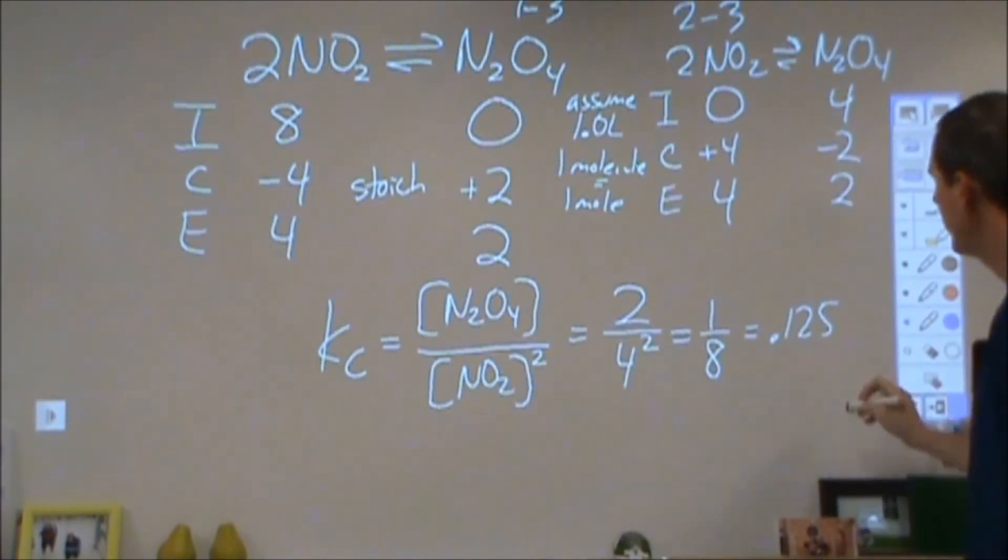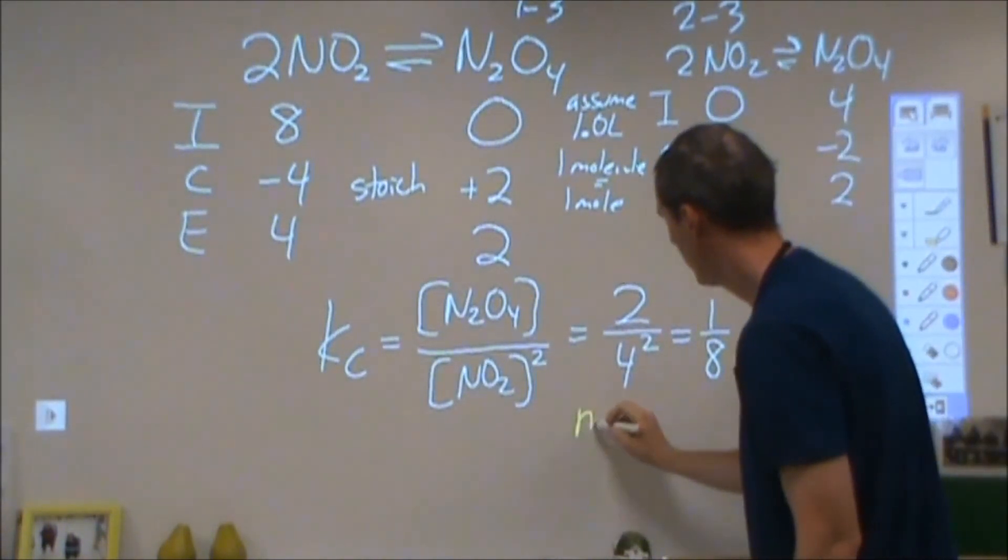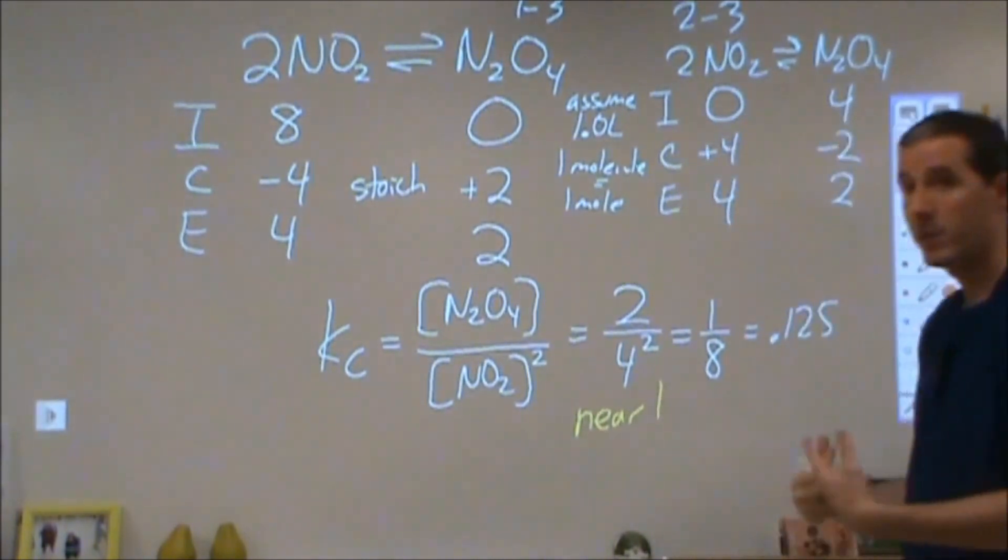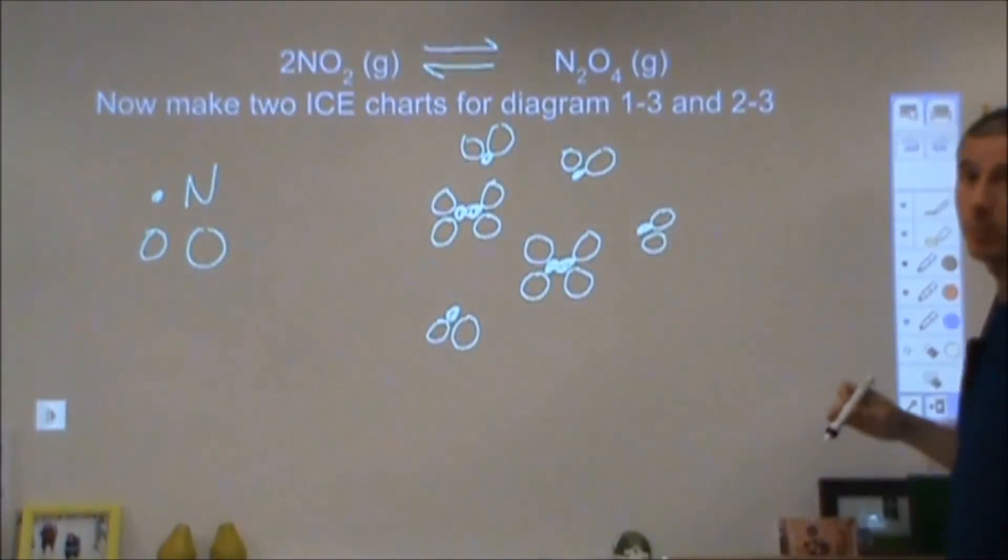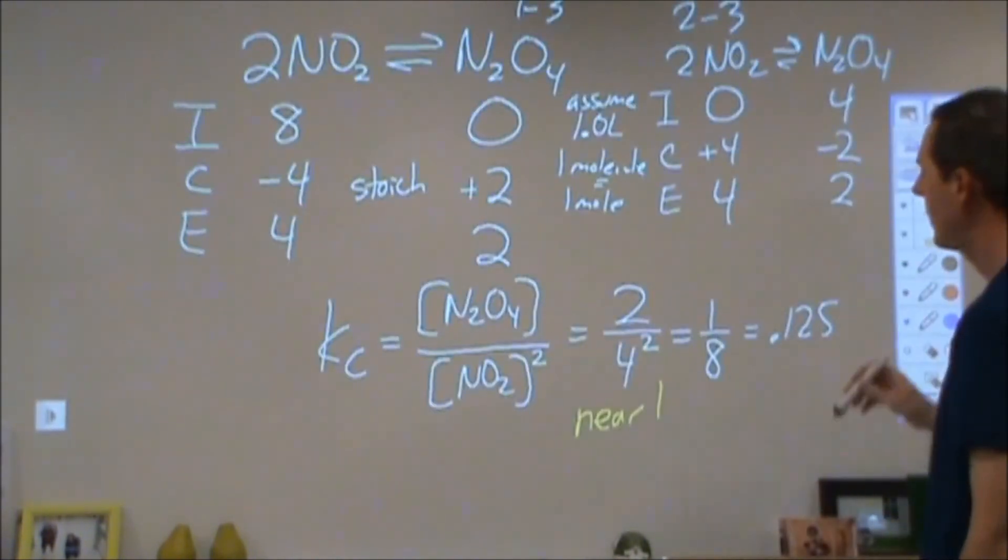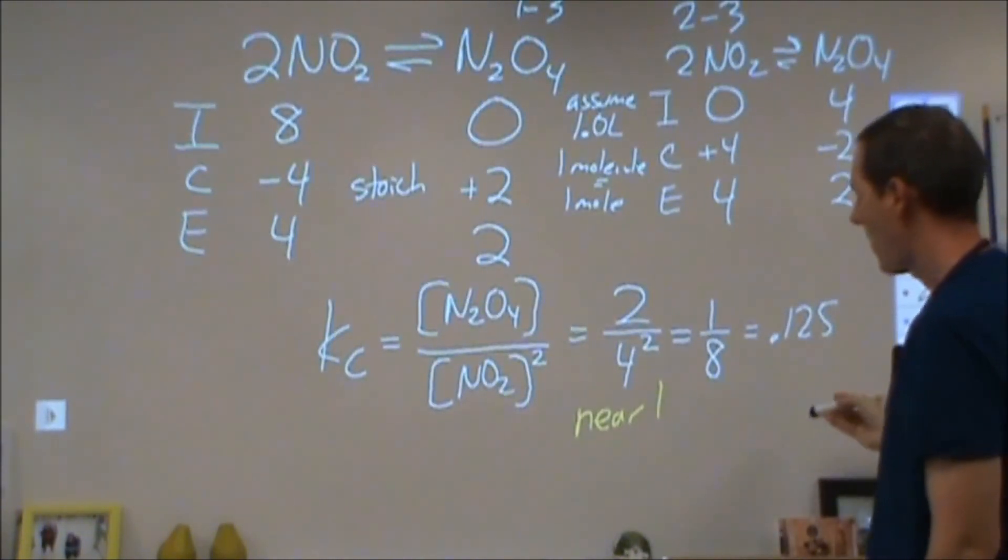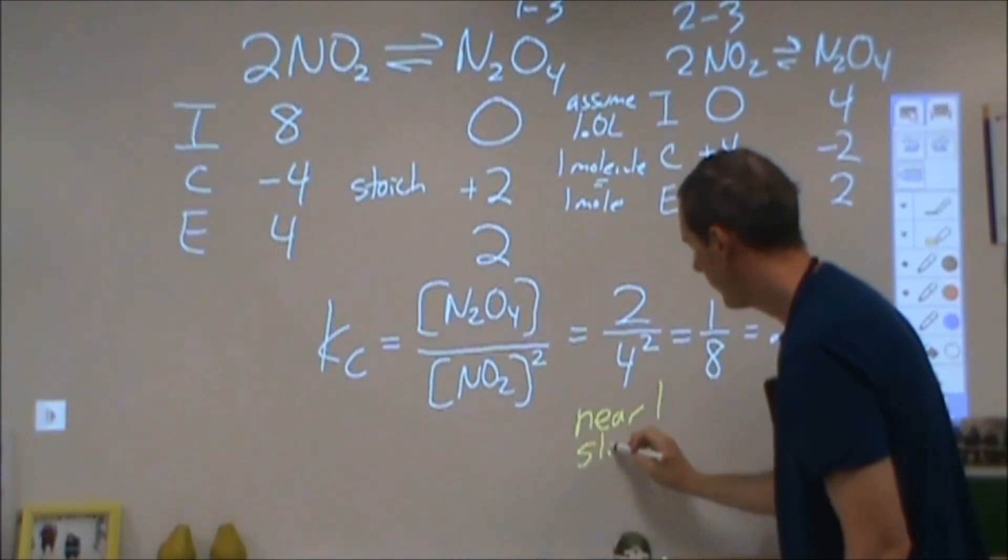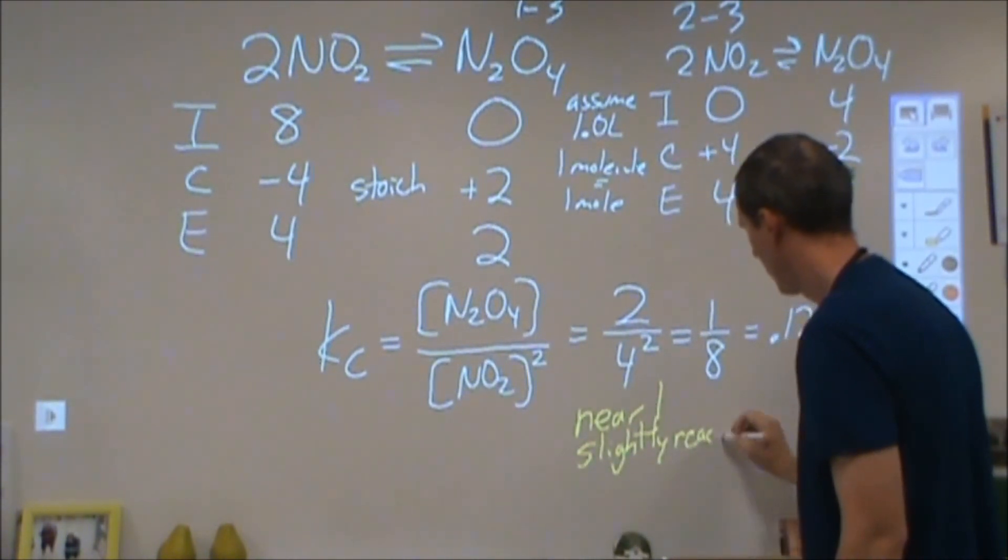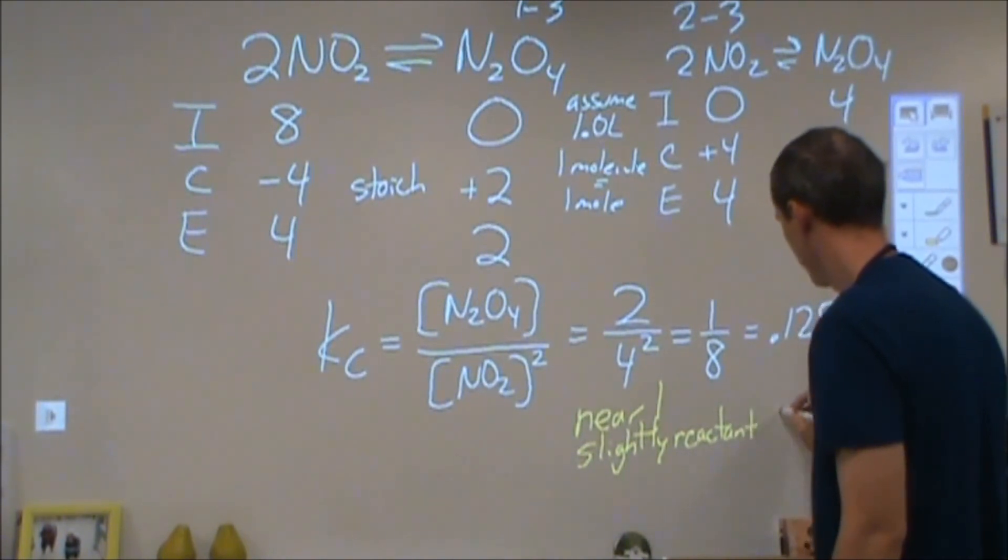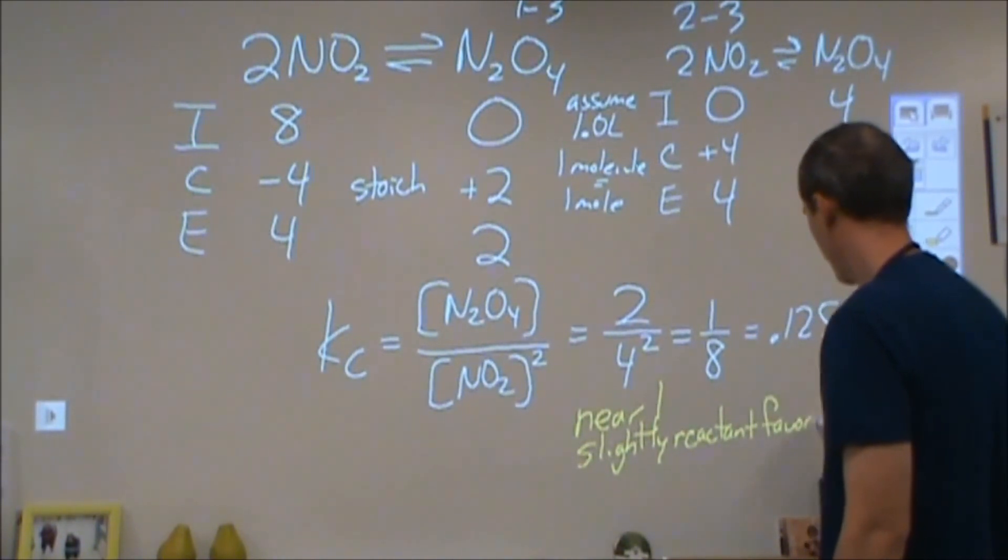If we do a little bit of analysis here, that's close to 1. It's near 1. So we have some reactant and some product present at equilibrium. It's not heavily shifted to one side or the other. And it's slightly, ever so slightly, reactant favored.